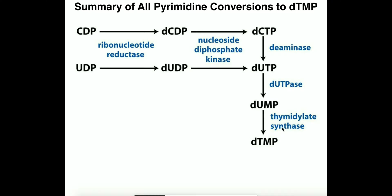Again that conversion is catalyzed by thymidylate synthase. One very important thing to understand about thymidylate synthase: this enzyme will only act when the substrate is a deoxynucleotide. It will not work if it's just simple UMP — it has to be deoxy-UMP. This makes sense because we're forming the nitrogenous base thymine, which is only incorporated into DNA, and DNA has the 2-prime OH group removed, making it deoxyribose.